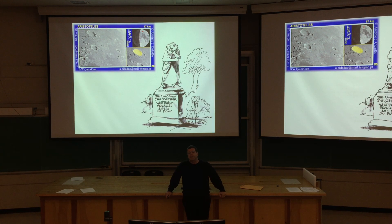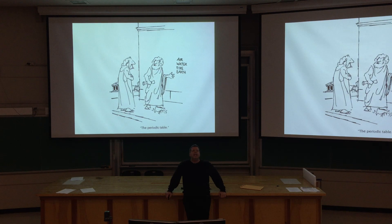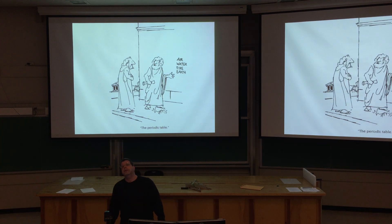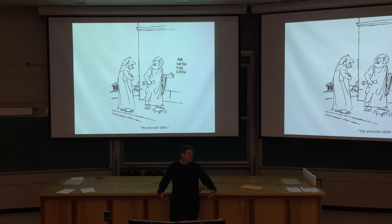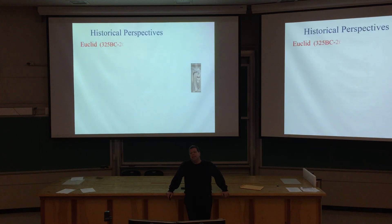It's not to say that Aristotle got everything right, or the ancient Greeks in general. They thought the periodic table had four things in it: air, water, fire, and earth. That didn't get them very far in chemistry, and therefore in biology or medicine. But still, at least that's a hypothesis to be tested, and that's the crux of the scientific method.